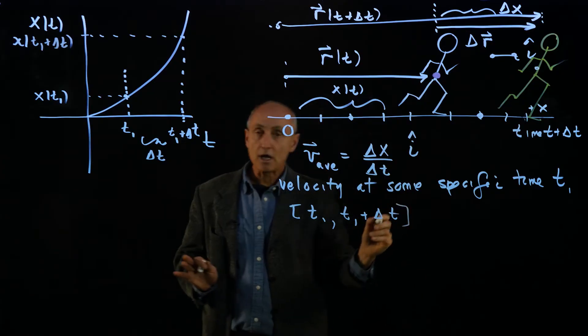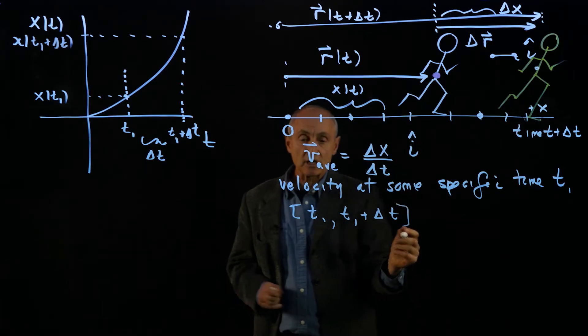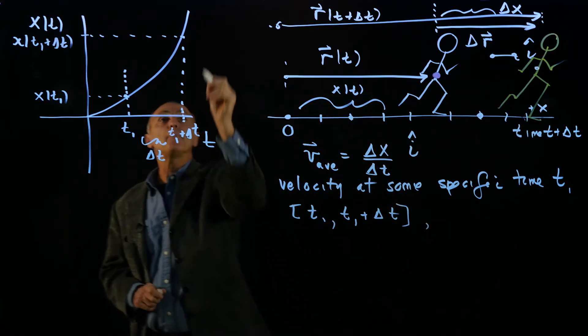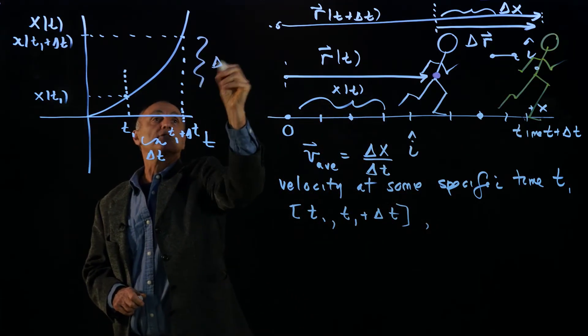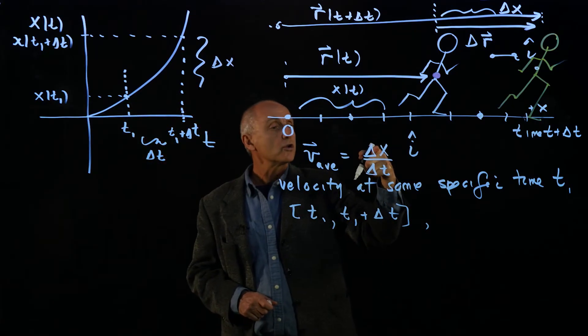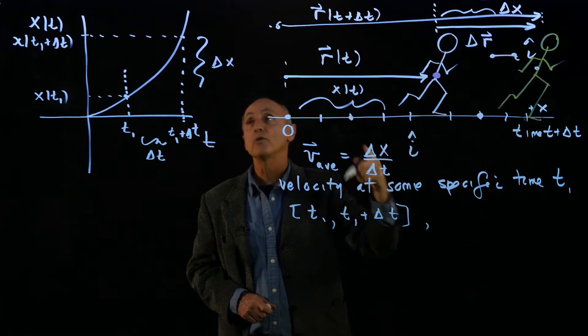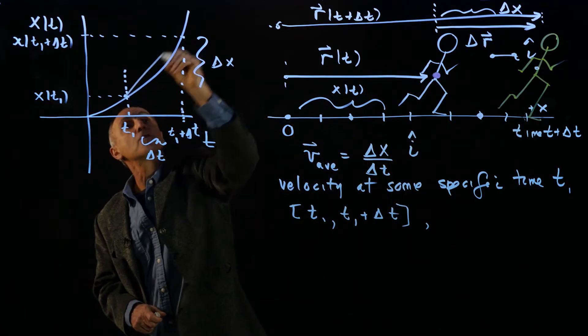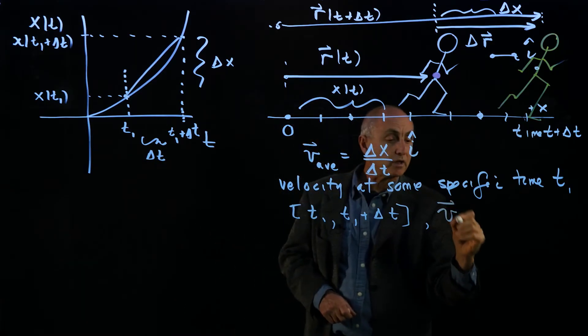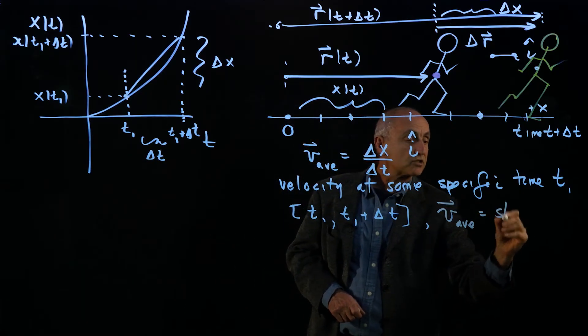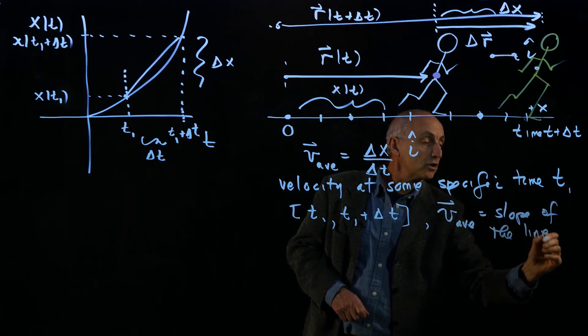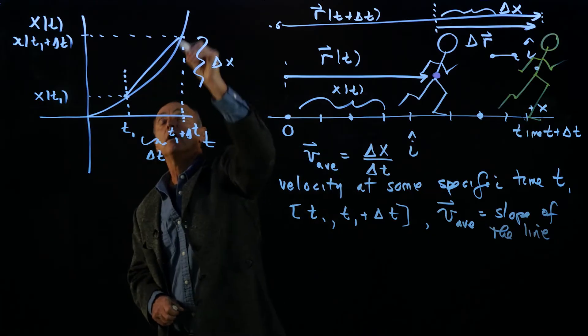Then for this time interval, the average velocity, so for this particular time interval, the average represents delta x over delta t. So it's just the rise over run. It's just the slope of this straight line. So for this particular interval, the average is the slope of the line shown here on the figure.